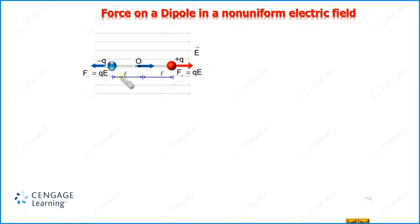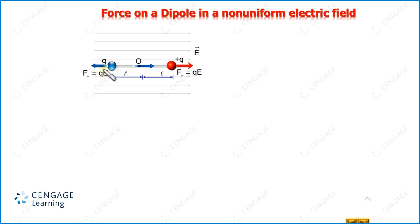Suppose a dipole is placed in a uniform electric field, aligned along the electric field lines, so the dipole moment vector and electric field make a 0 degree angle. The negative charge is on one side and the positive charge on the other. The negative charge experiences force QE in the leftward direction, and the positive charge experiences force QE in the rightward direction. So the net force experienced by the dipole is zero.